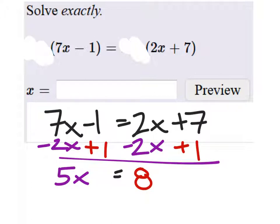Well, I guess it's not as pretty as I thought it would be, but we have to divide by 5 on both sides. That tells us that x is 8 fifths.